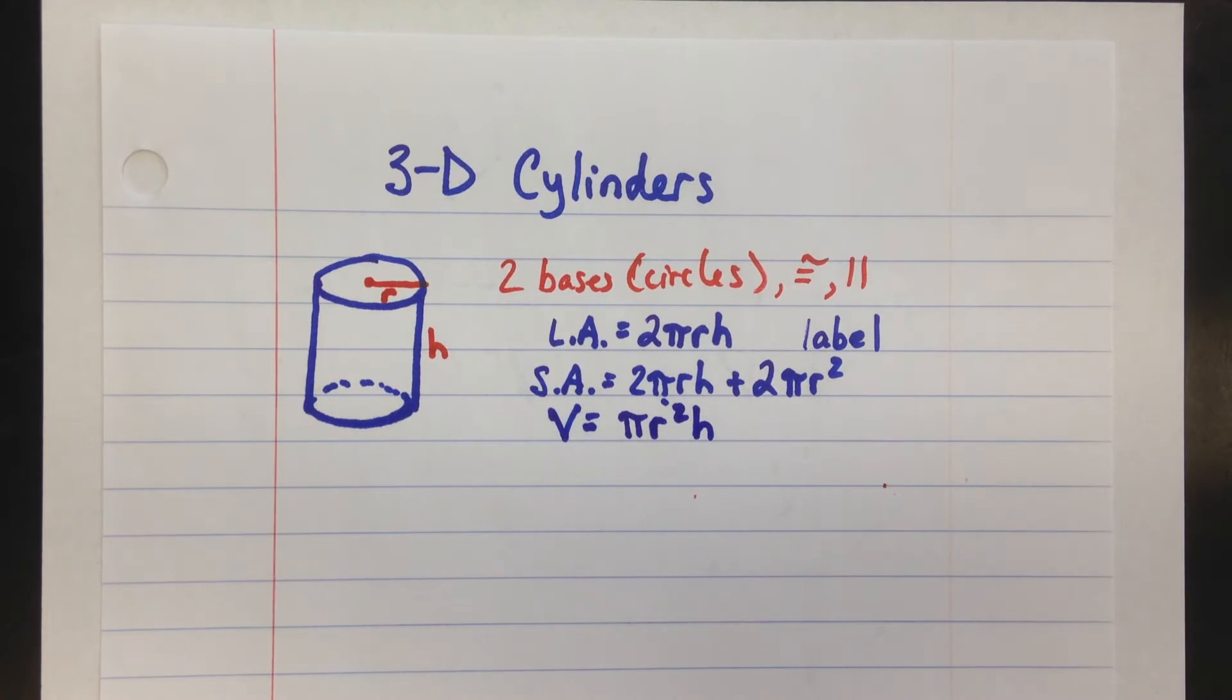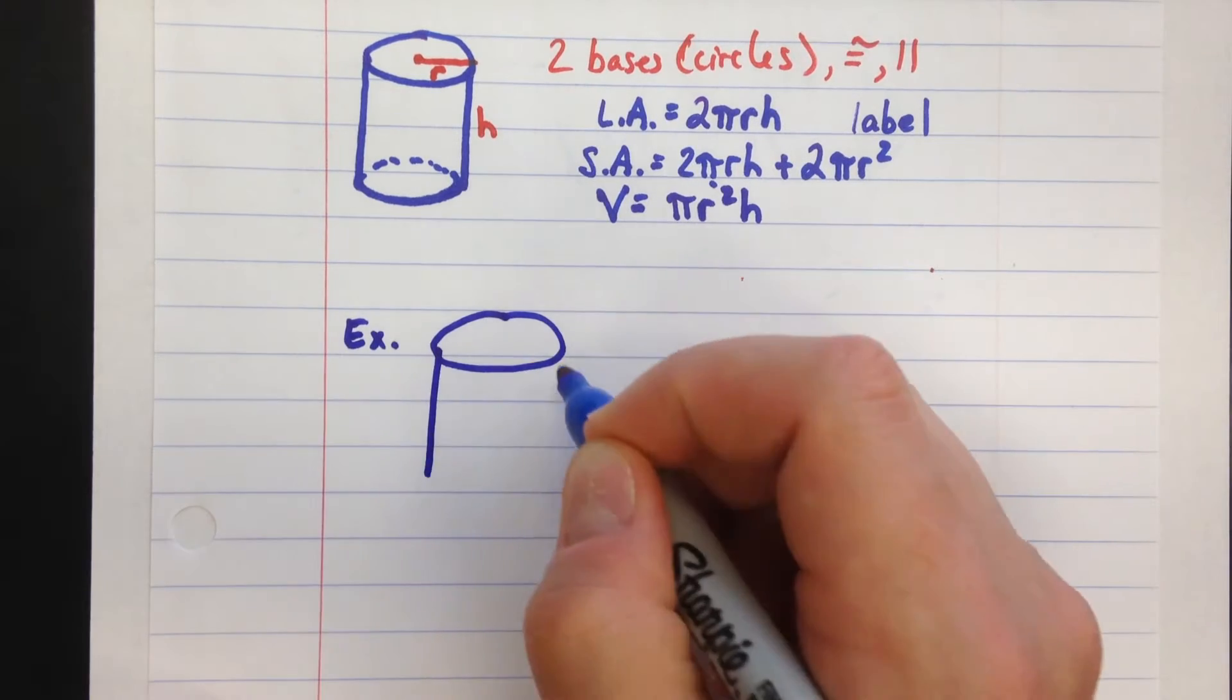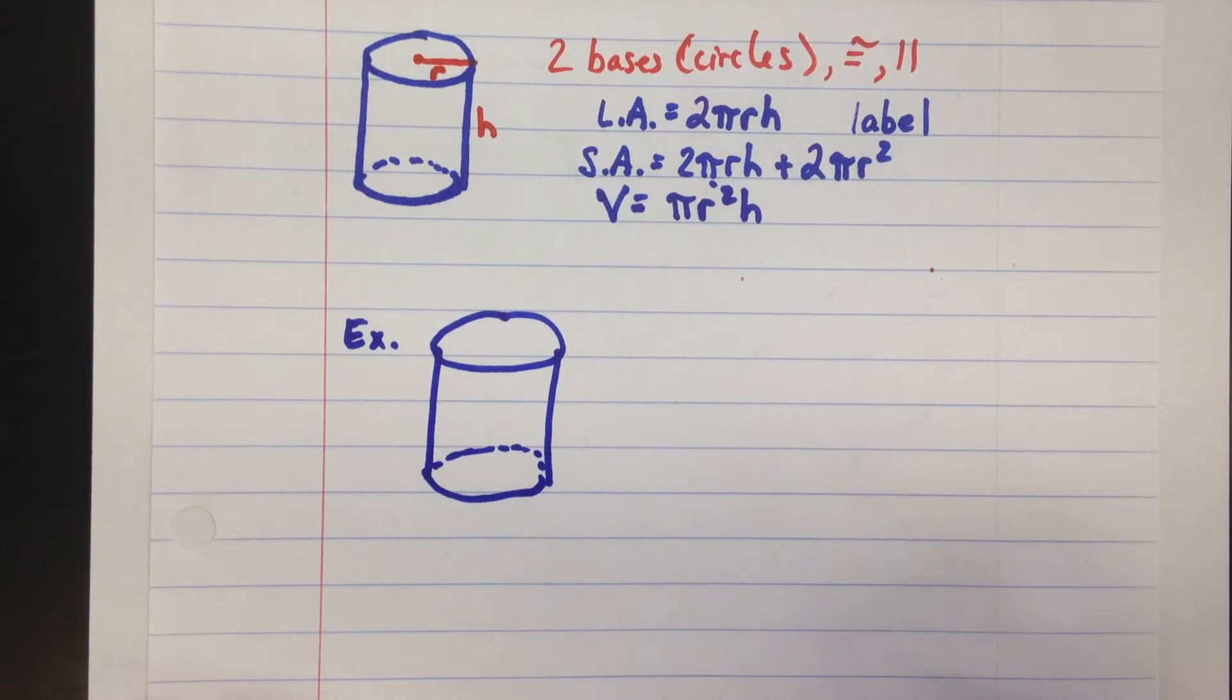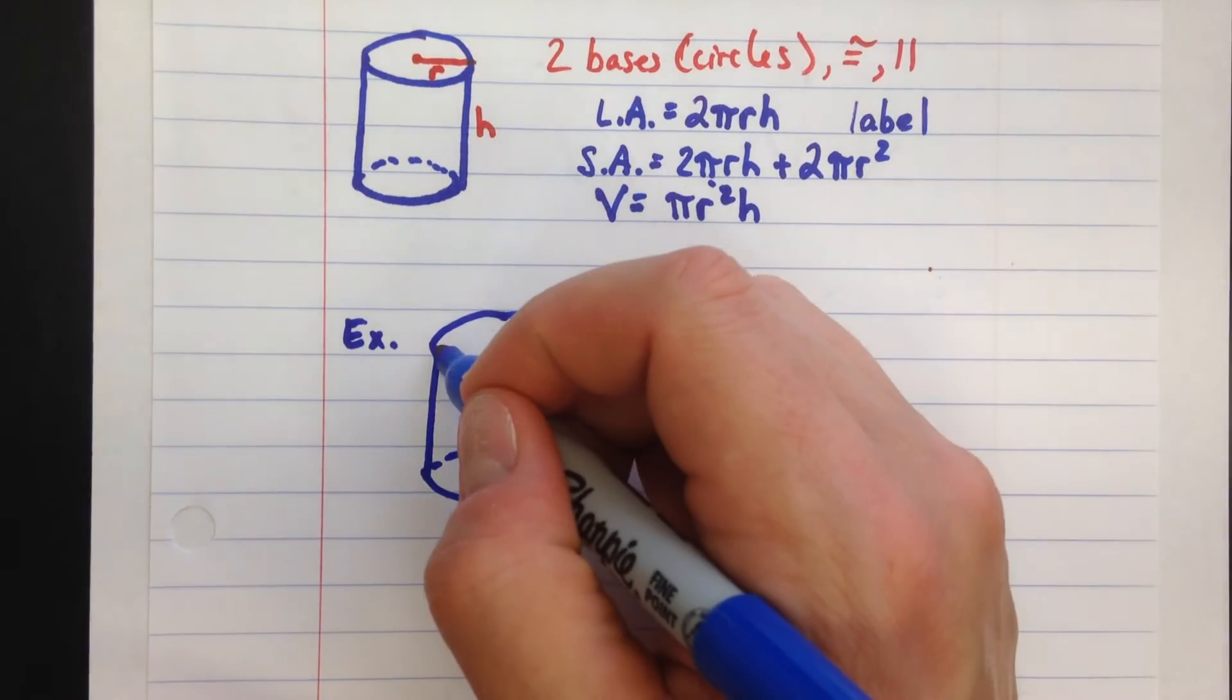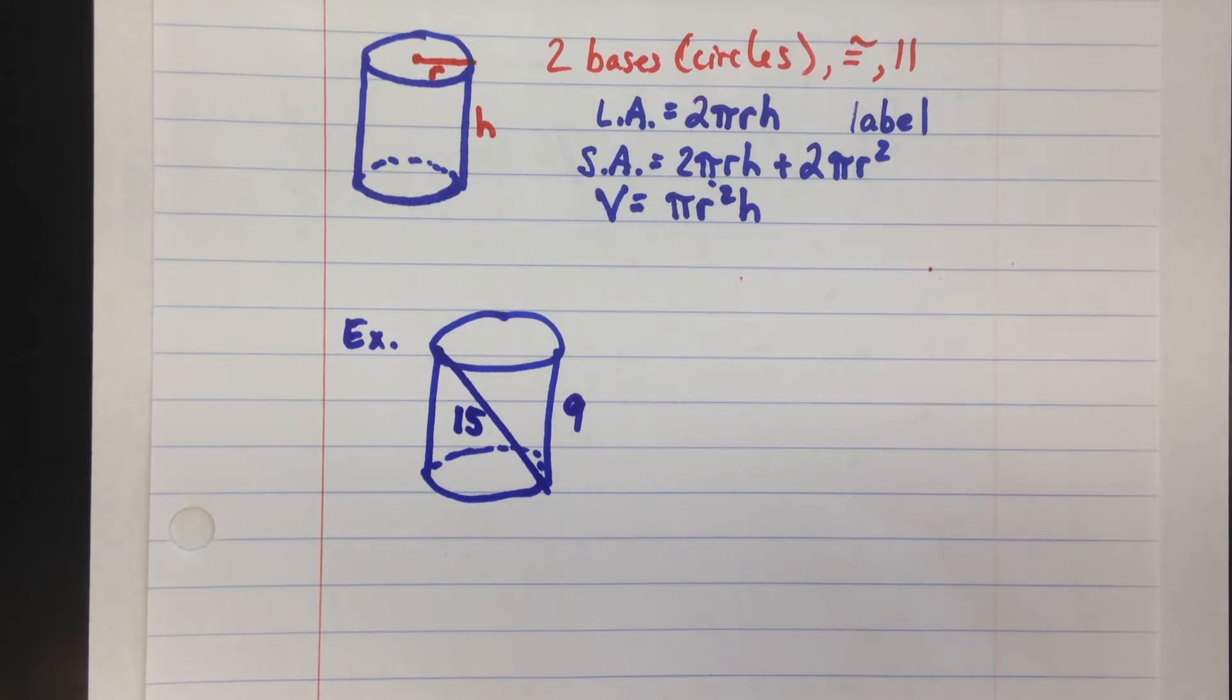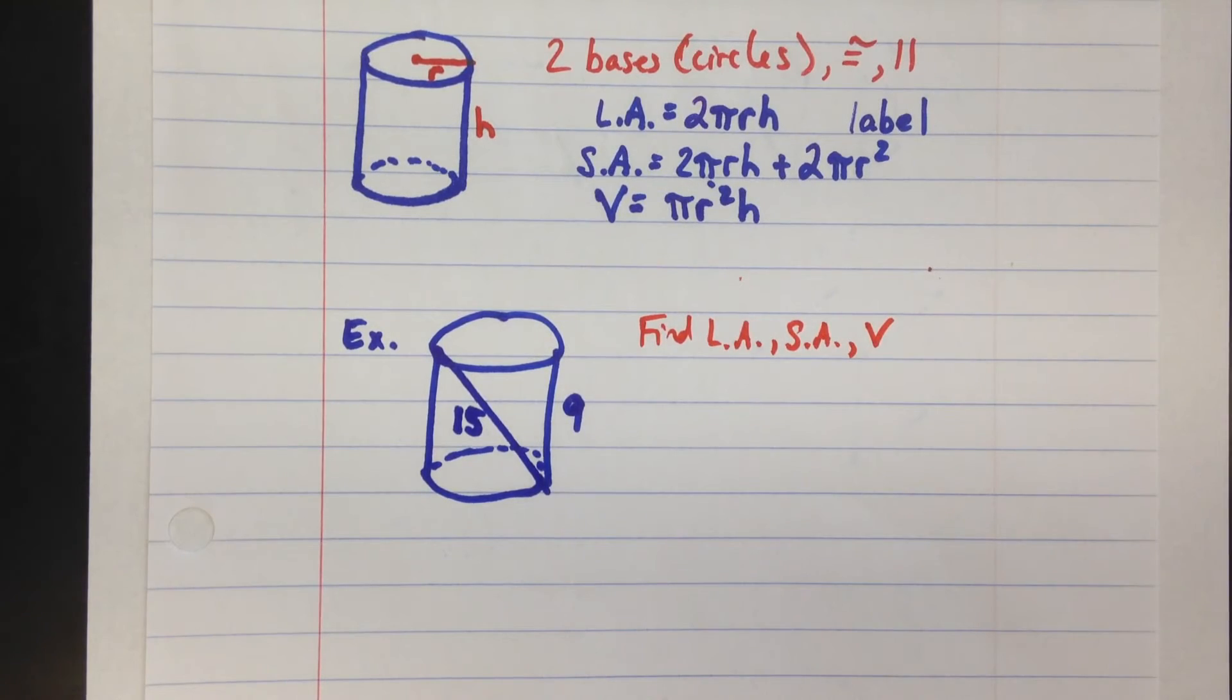Let me give you an example here. We're going to draw a different cylinder. Not a great picture, I apologize for that. Let's say that we know that this is 9 and this is 15, so you've got 9, you've got 15. And we want to find lateral area, surface area, volume: find LA, SA, V.